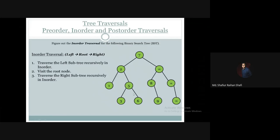When we traverse the left subtree of node 7, at first we have to visit the left subtree of node 2, which is the node labeled 1. So we are going to print 1. Then we will traverse the right subtree of node 2.